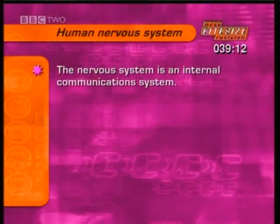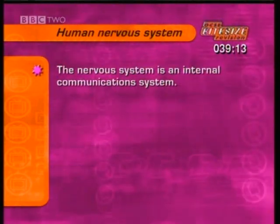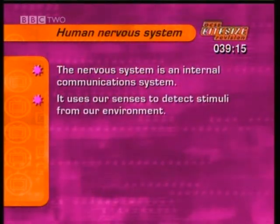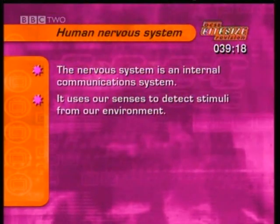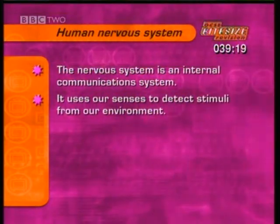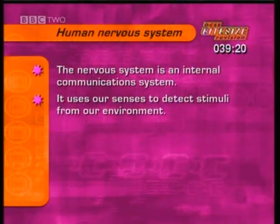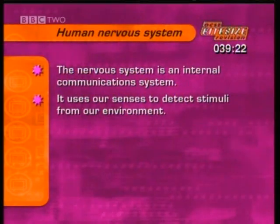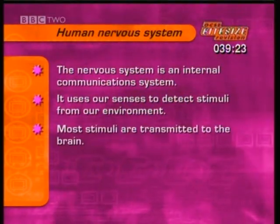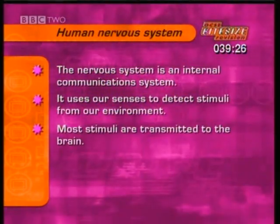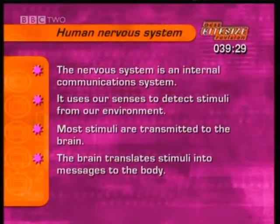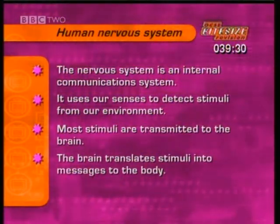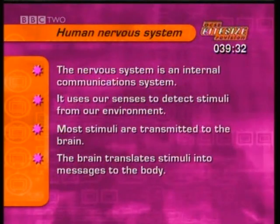The nervous system works like an internal communication system. It uses our senses to detect stimuli from our environment, such as light, heat, sound, smell, taste, or gravity. Most of these stimuli are then transmitted to the brain, where they are translated into messages to other parts of our body.